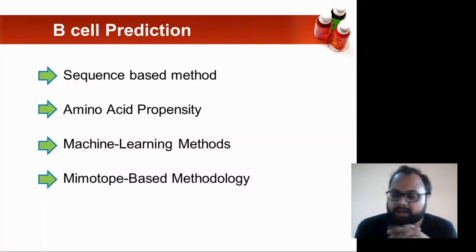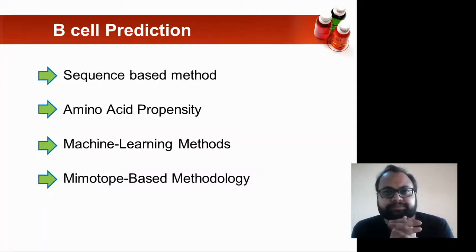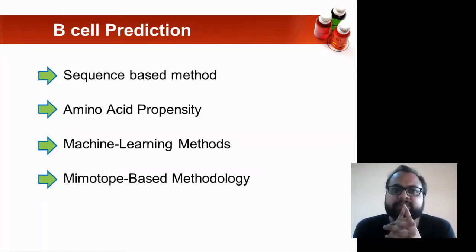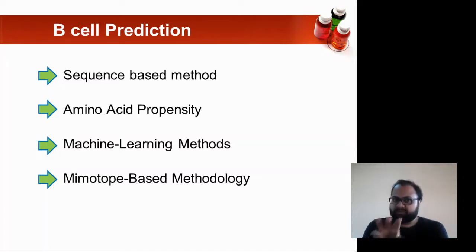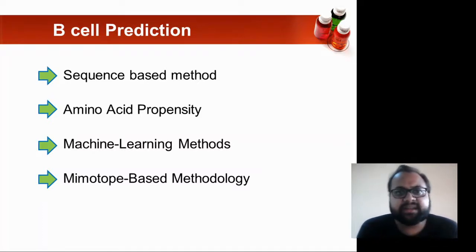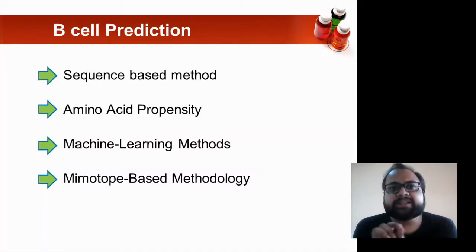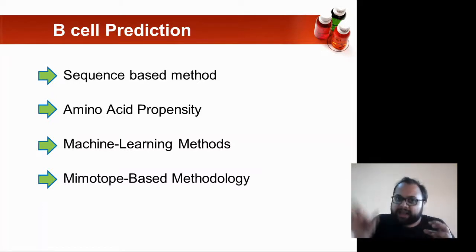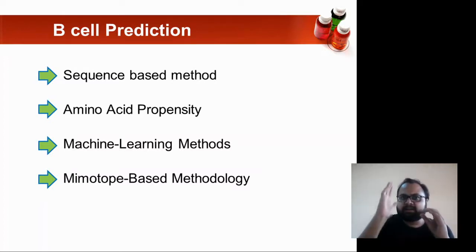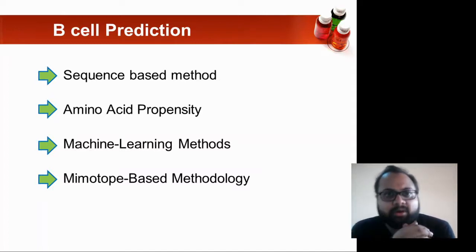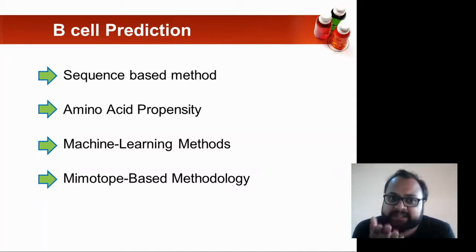There was a paper by Pizzi et al. who proposed a new approach for mapping B-cell epitopes, in which the phage display library is scanned against a desired antibody to obtain what we call MIMOTOPS. So you have a phage display library scanned against antibodies to obtain a MIMOTOPS.